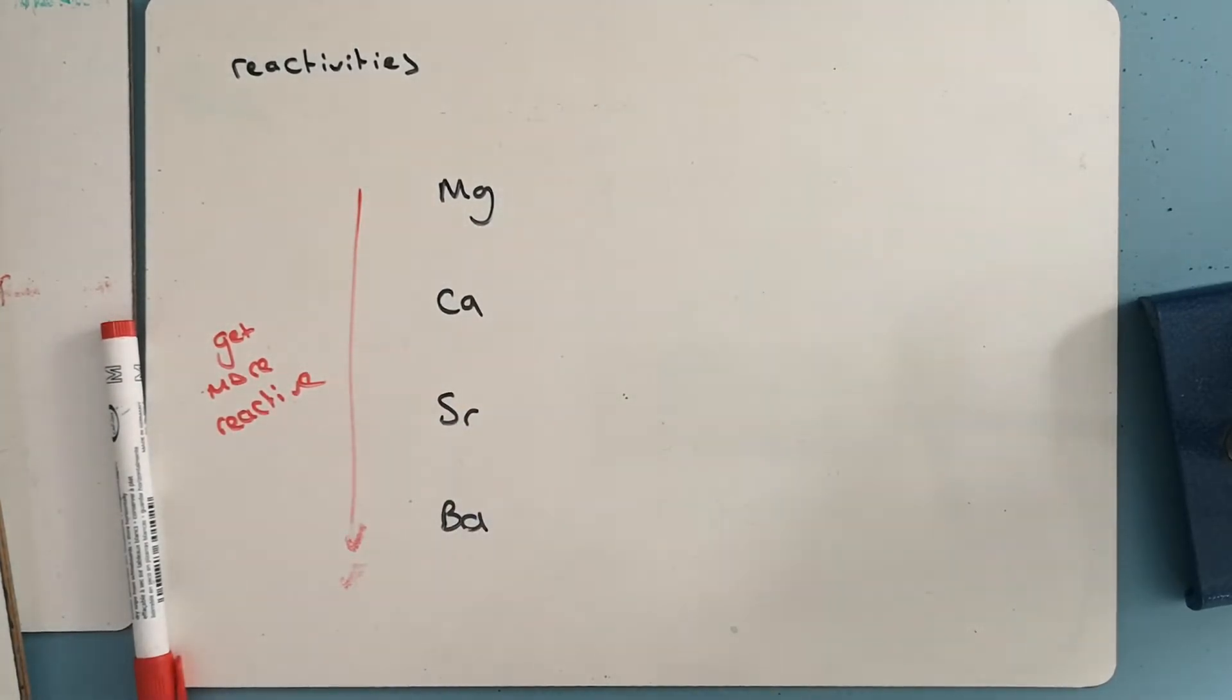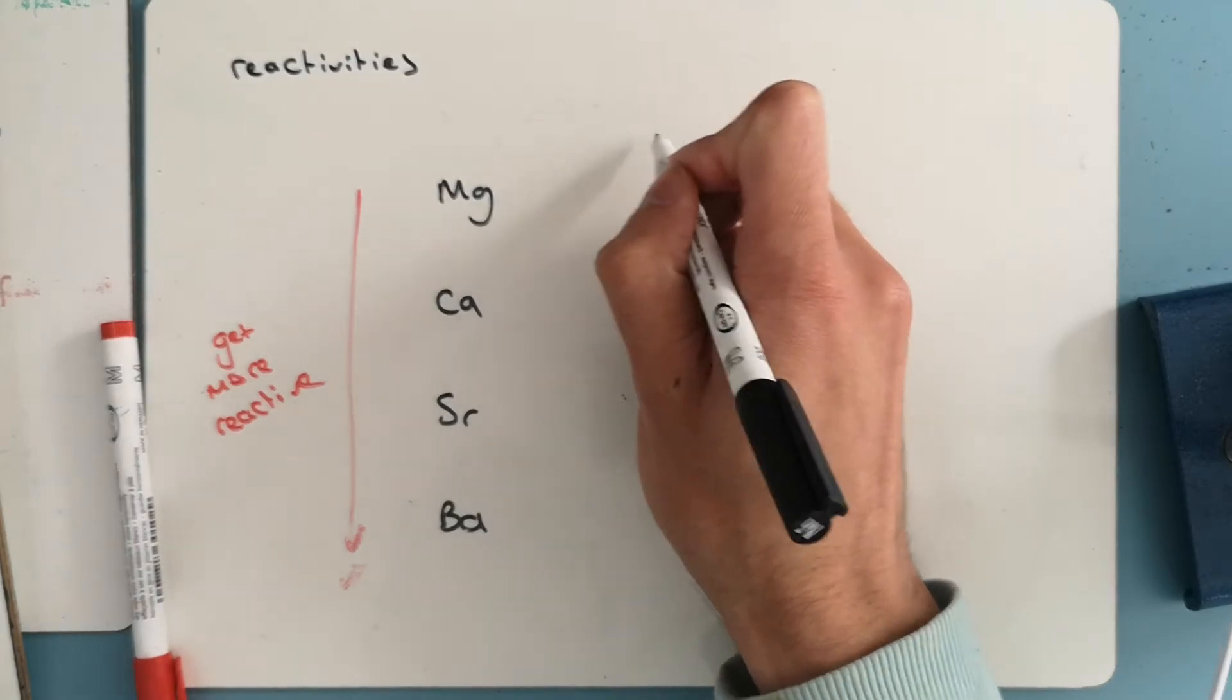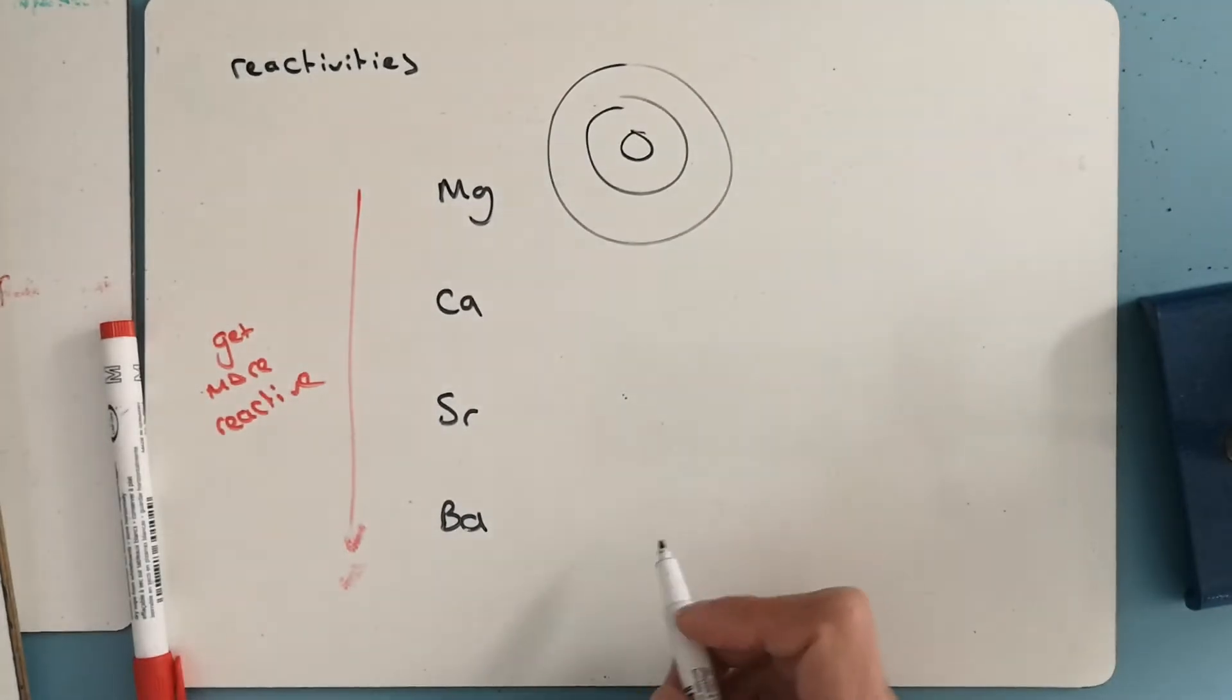The ones that can do that the easiest, find it easier to remove their electrons, they're going to be more reactive, they're going to lose their electrons easier, so react with things. And if we just compare magnesium and barium, I'm going to use Bohr's model, just because it's a nice way to demonstrate.